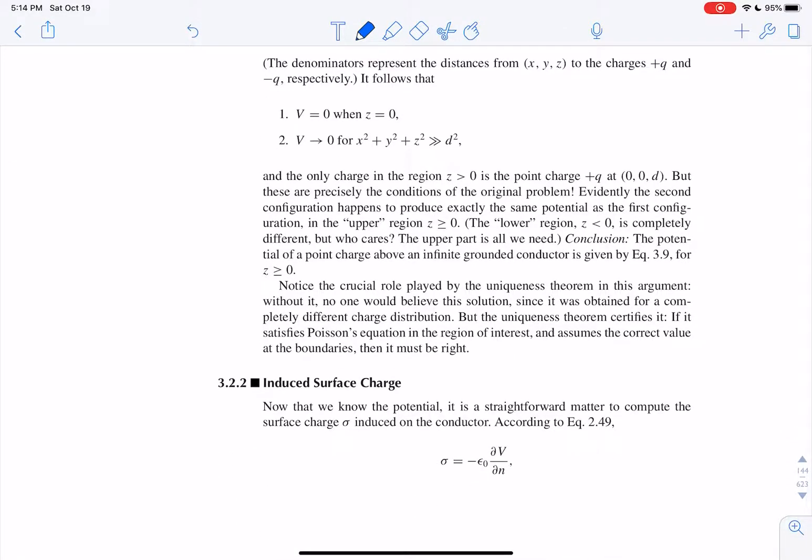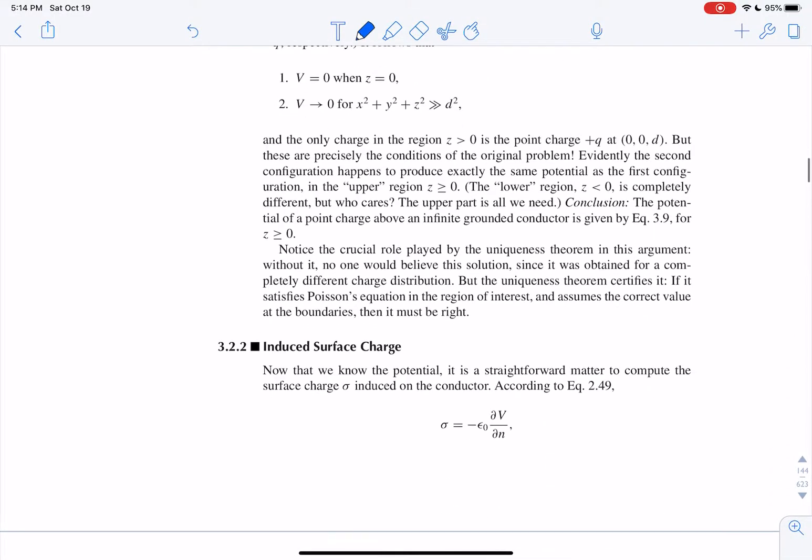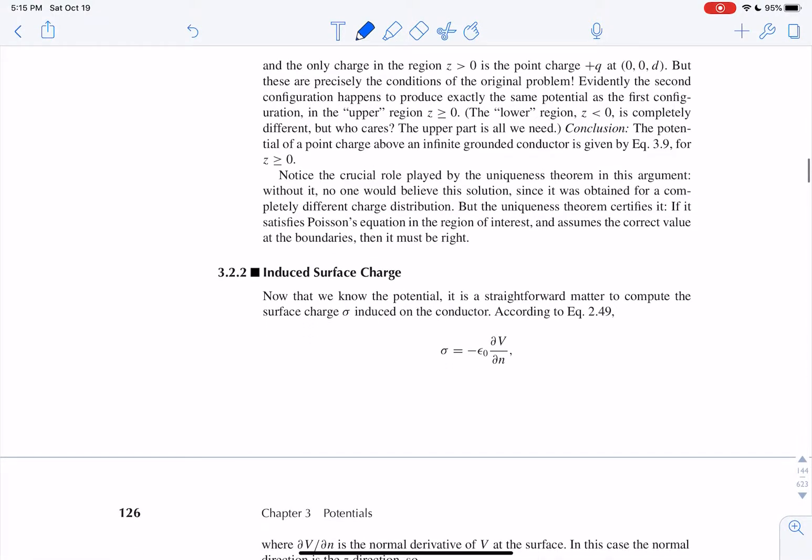So the potential of a point charge above an infinite grounded conductor is given by equation 3.9, this equation for an infinite grounded plane and a positive charge q above it. That's kind of amazing. That's really amazing. That, since it satisfies that equation and because of the uniqueness theorem, as long as we have the boundary condition satisfied, the charge is the same for both these cases. That's crazy.